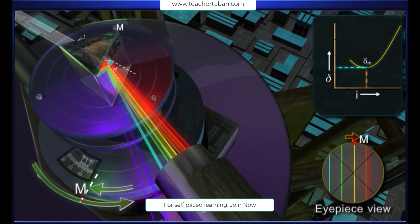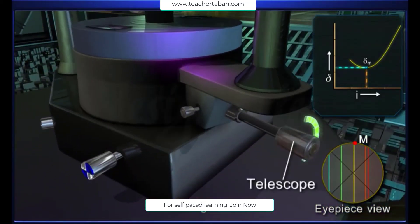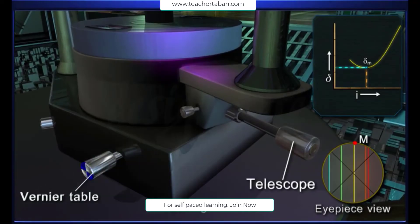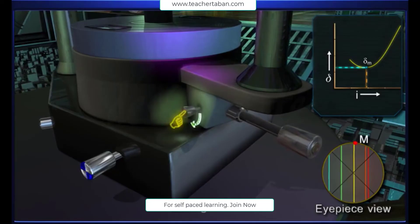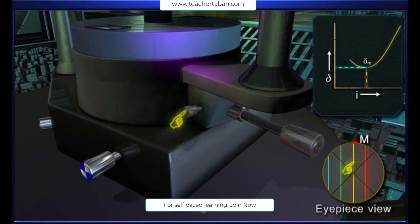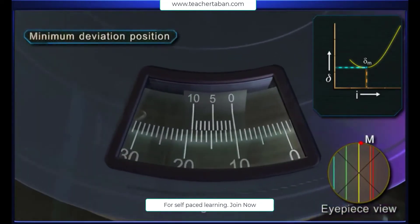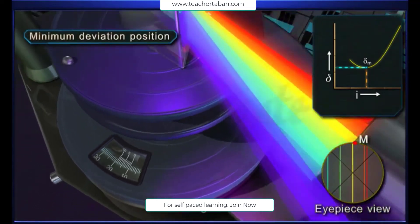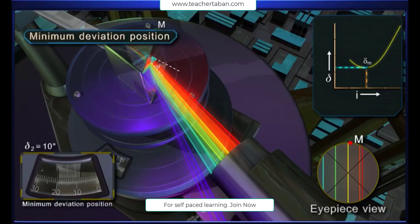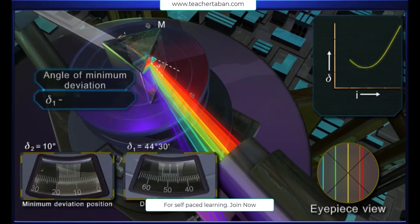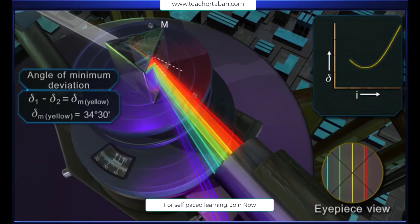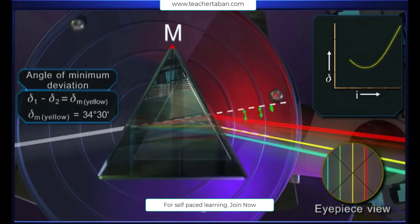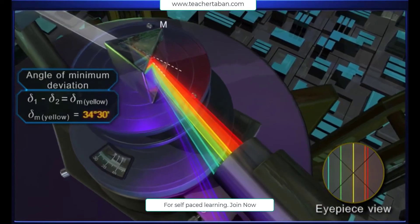The prism table is rotated back to position M, where the telescope and the vernier table are clamped. Using the tangential screw, a particular spectral line is made to coincide with the cross wires. This is the position of minimum deviation. The spectrometer reading for this position is taken as delta 2. The difference of the two readings, delta 1 minus delta 2, gives the angle of minimum deviation delta M for the mean yellow line. The angle of minimum deviation is different for different colors.